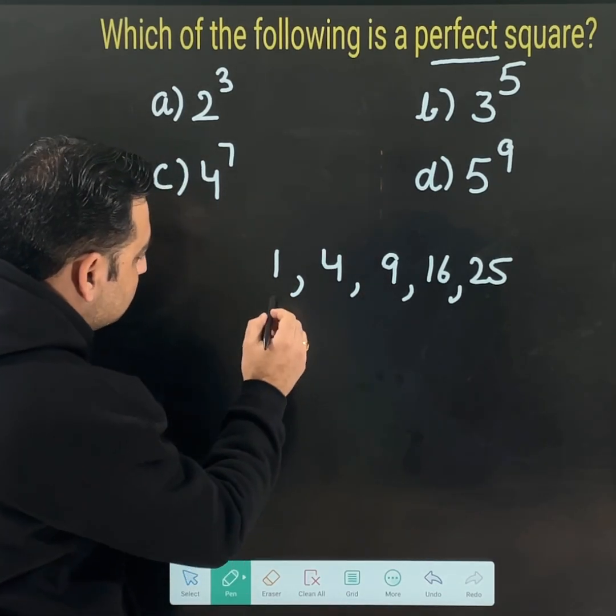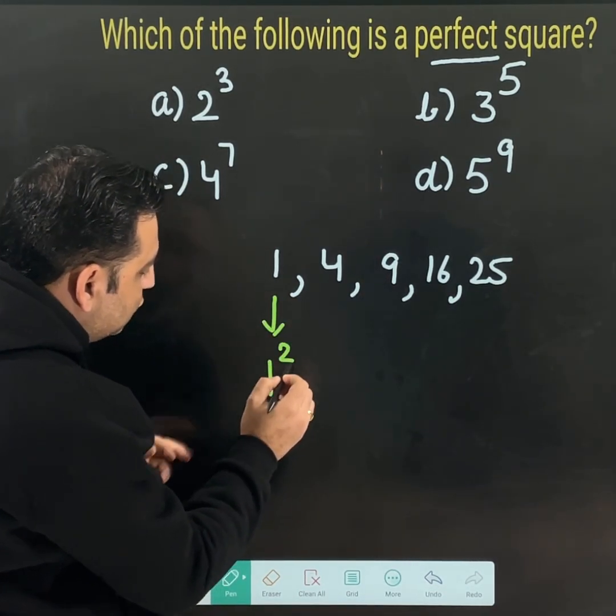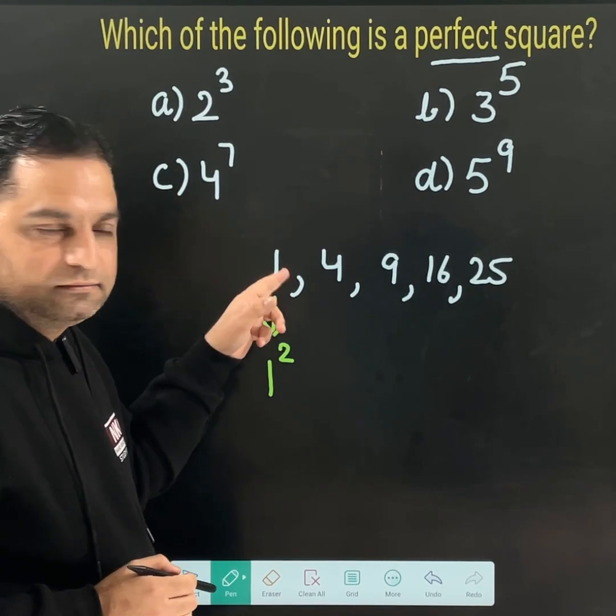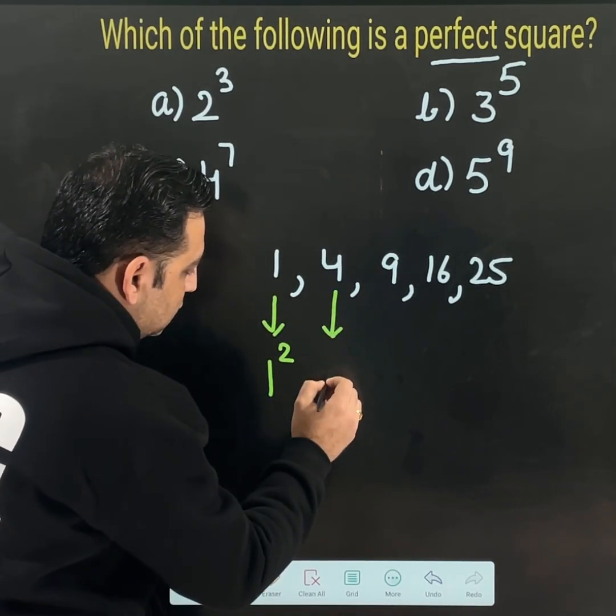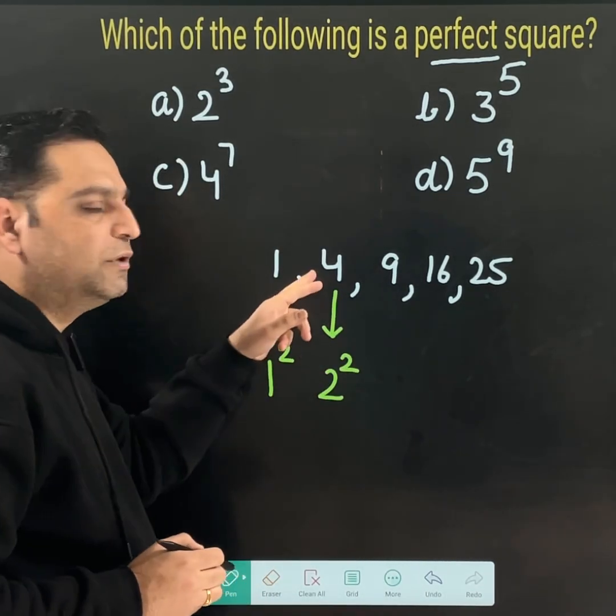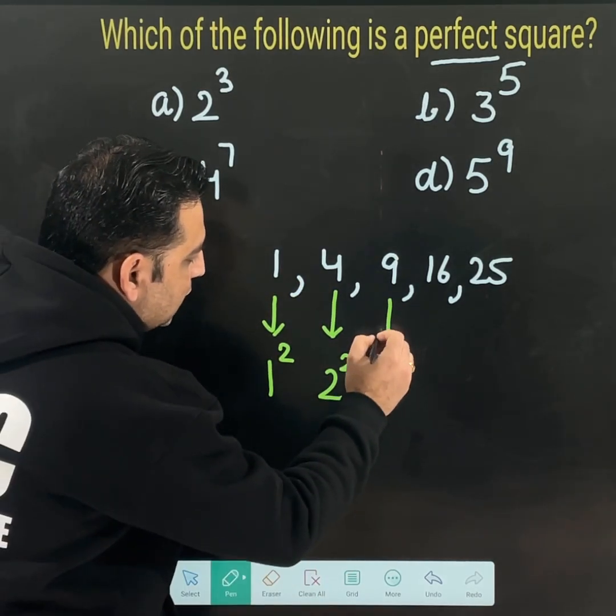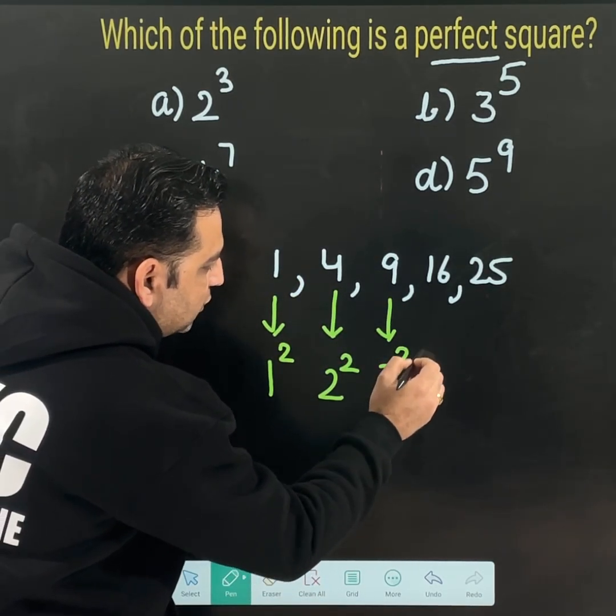For example, 1 squared is making 1, 2 squared is making 4, 9 is made by the square of 3, like that.